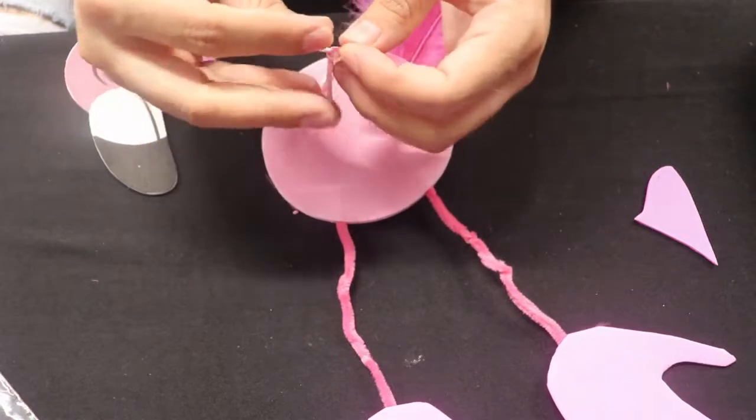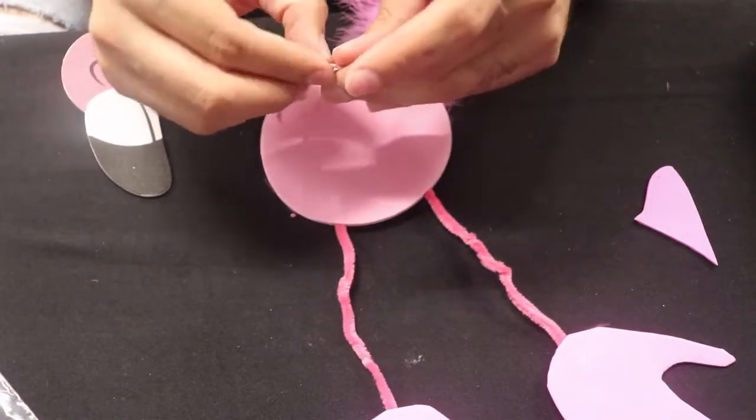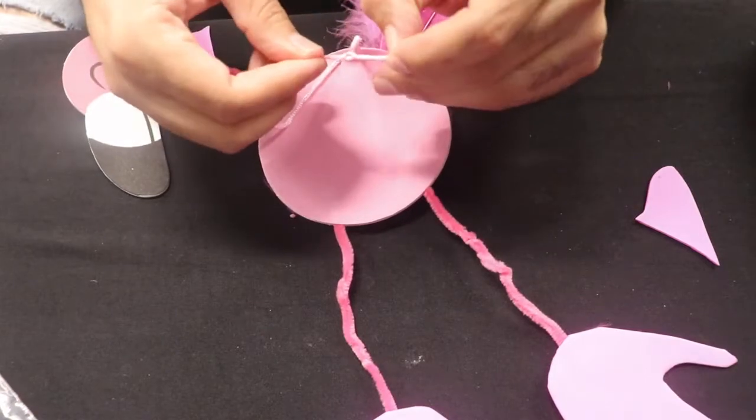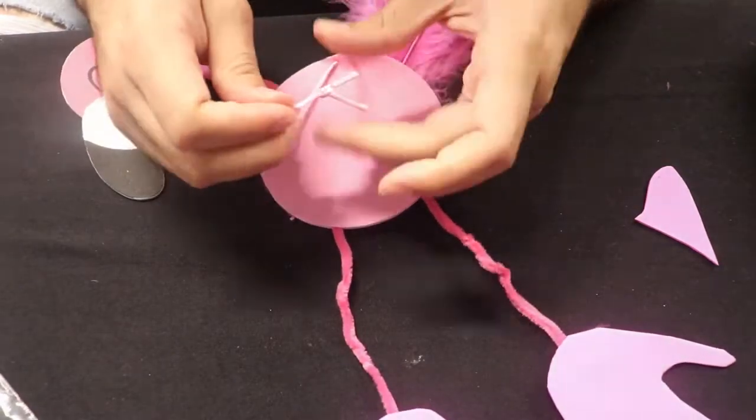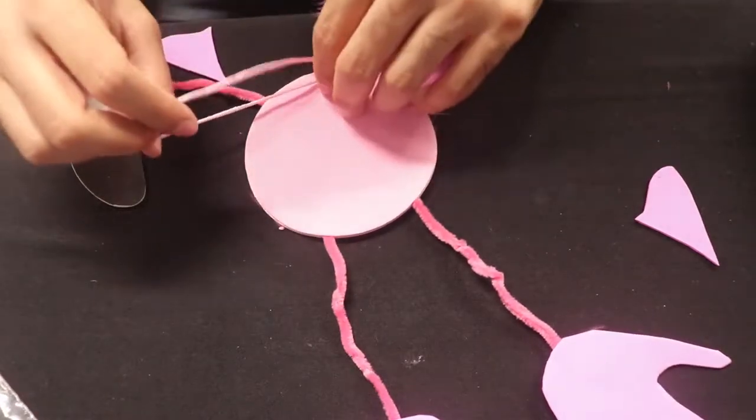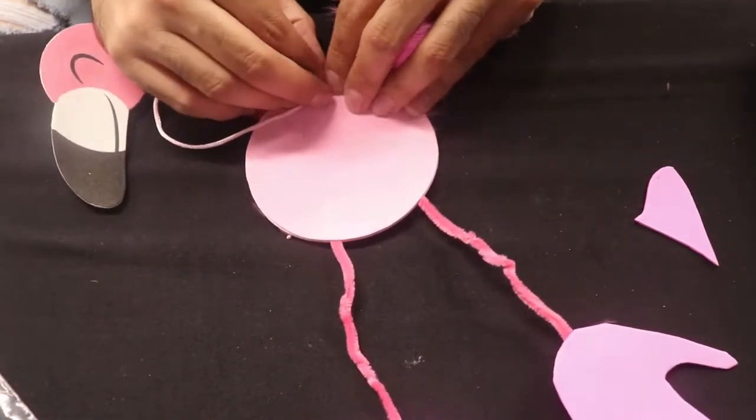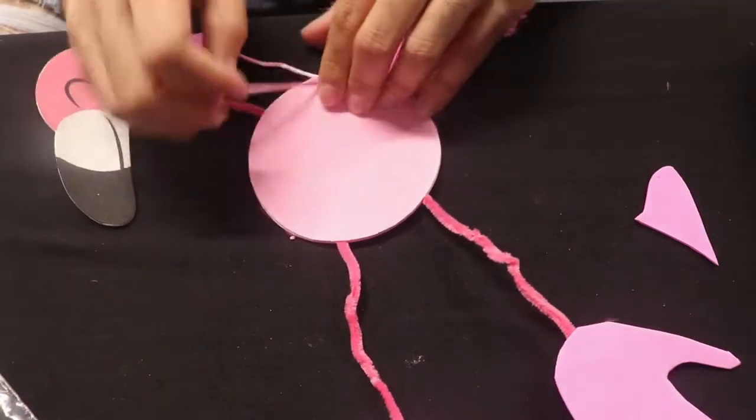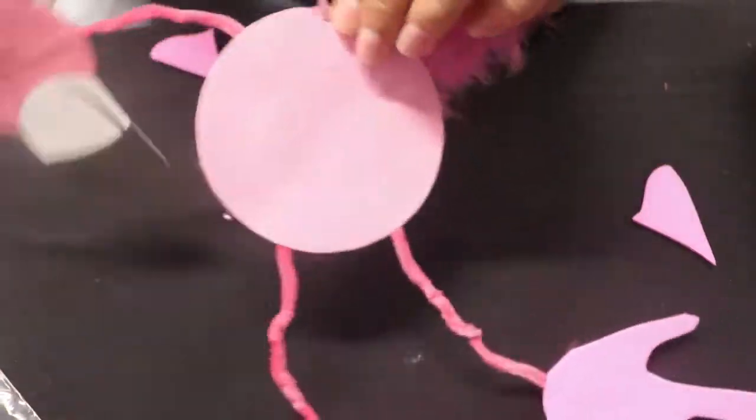I'm going to tie a knot. Tie one more knot. And my flamingo - you know what, I'm going to tuck this in here so it's hidden away. And there we go. My flamingo friend is complete.